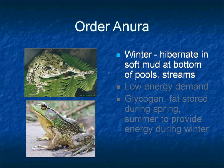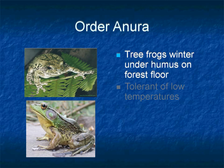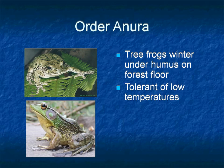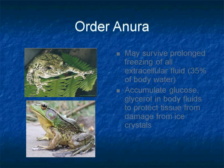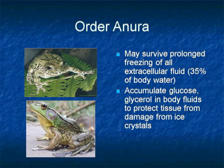During winter, these frogs hibernate in soft mud at the bottom of pools and streams. During hibernation, low energy is required for their life processes, which they derive from glycogen and fat stored in their bodies during spring and summer. Most terrestrial frogs like tree frogs hibernate in the humus of the forest floor — humus being the organic soil formed by decomposition of plant material. Many frost-tolerant frogs survive by freezing all their extracellular fluid, representing 35% of body water, and accumulate glucose and glycerol in body fluids to protect tissues from ice crystal damage.